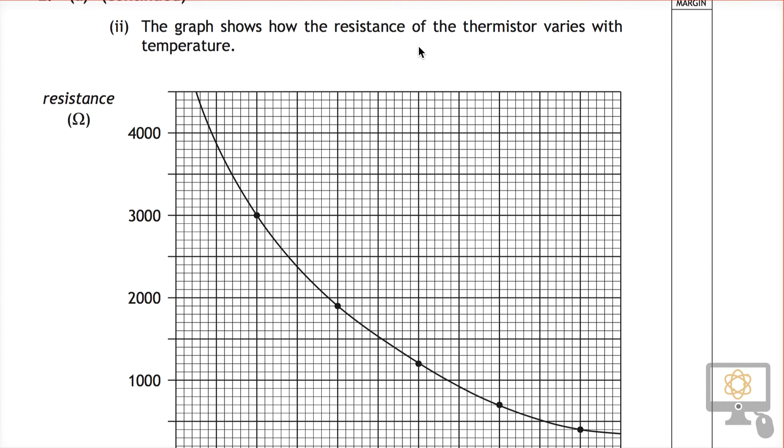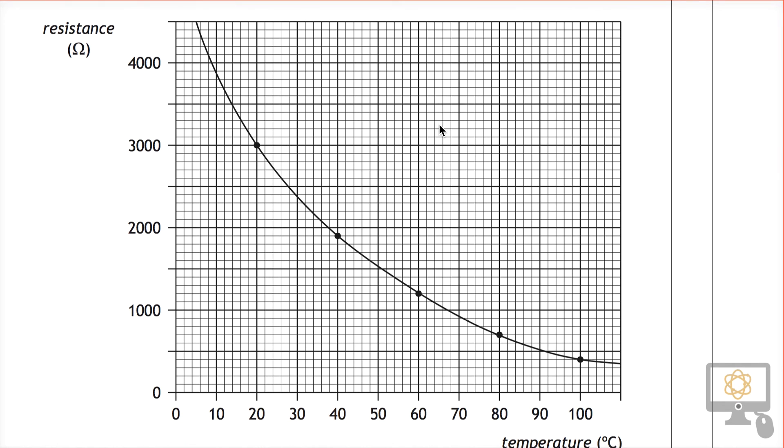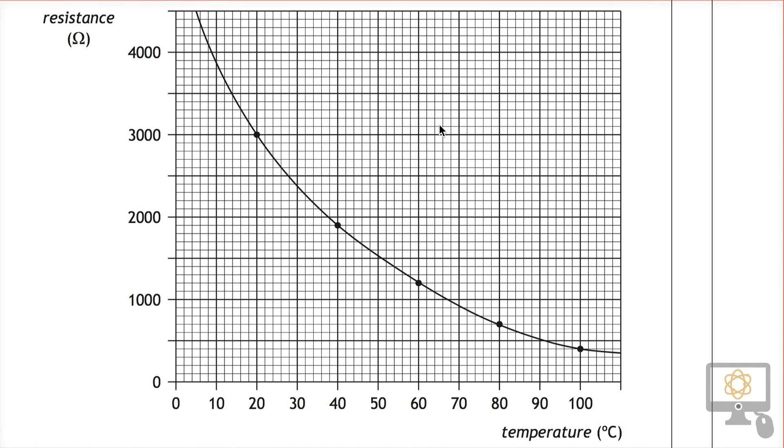The graph shows how the resistance of the thermistor varies with temperature. Let's check our understanding of thermistors. This is what we all learn at school. It means temperature up, resistance down. So for a thermistor, as the temperature goes up, the resistance drops. And that's what this graph is showing us.